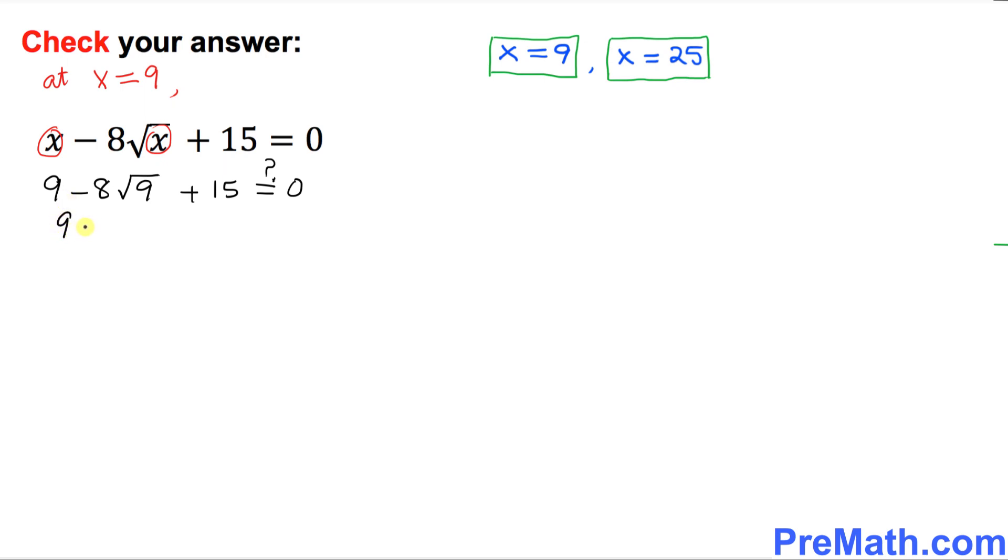Let's simplify the left-hand side. 9 minus this square root of 9 is 3. So 8 times 3 plus 15. So 9 minus 24 plus 15. So this, if you add and subtract, that's going to give you 0.